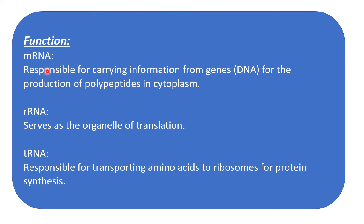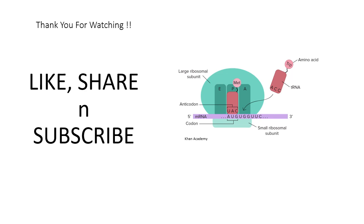To revise the functions: mRNA is responsible for carrying information from genes — from DNA — for the production of polypeptides in the cytoplasm; it serves as the template for translation. tRNA is responsible for transporting amino acids to ribosomes for protein synthesis. Remember the differences in mRNA formation between eukaryotes and prokaryotes, and the differences in ribosomal subunit sizes. Do like and share this video with your friends, subscribe to the channel, and thank you for watching.